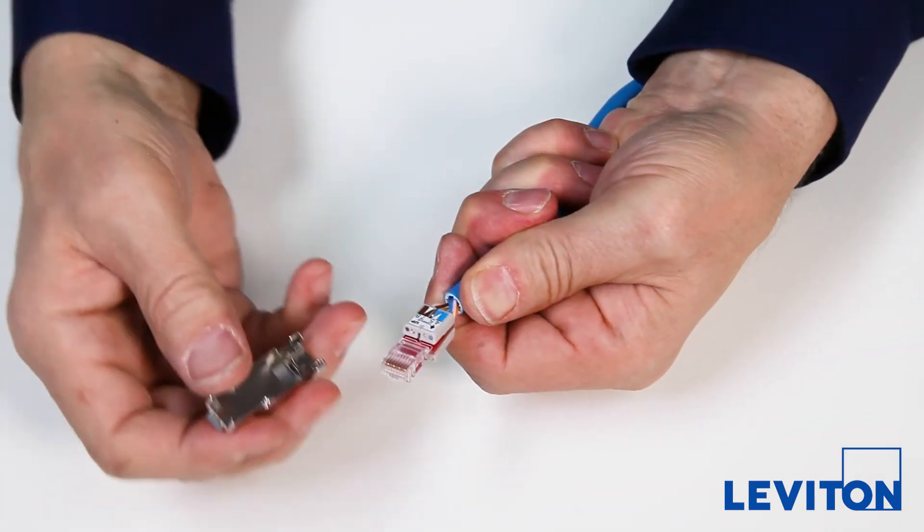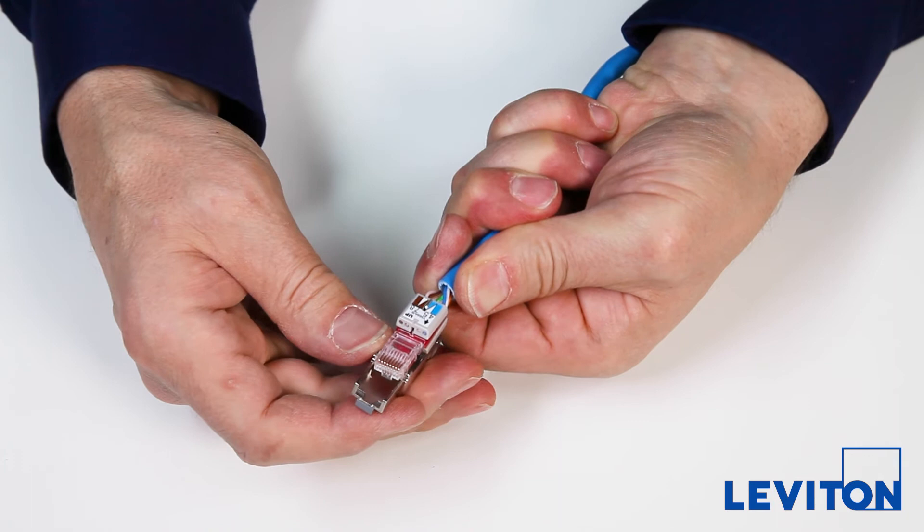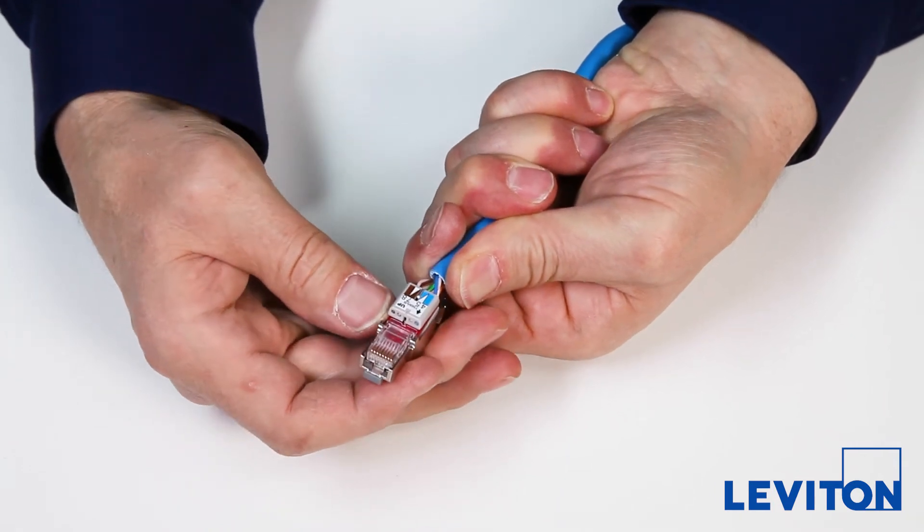Place the terminated plug assembly into the plug body. Make sure the assembly is aligned with the front end of the body.